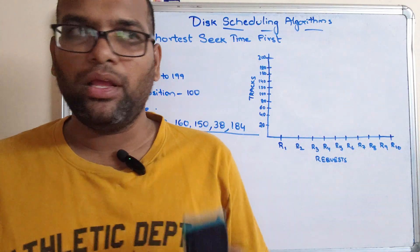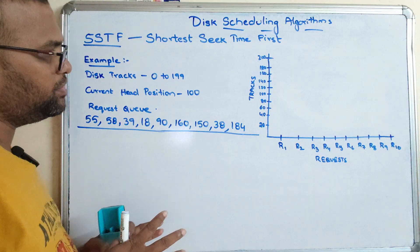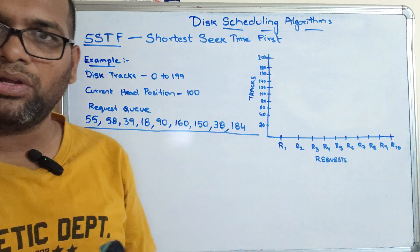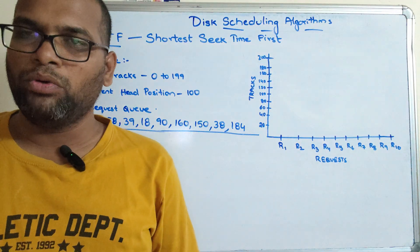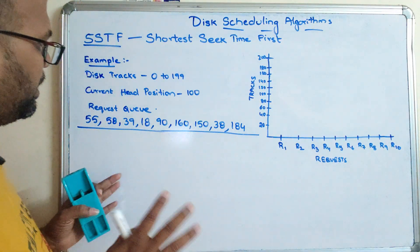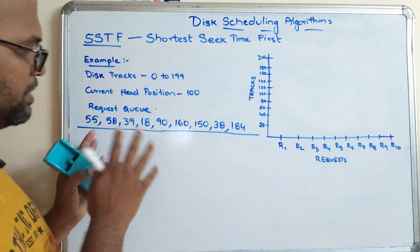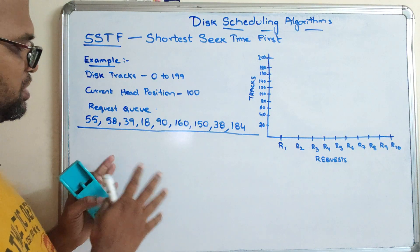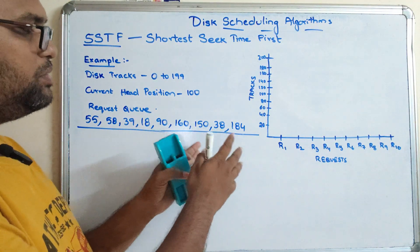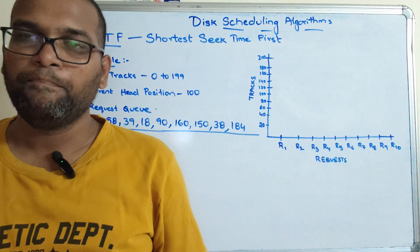We are taking the same example: disk tracks from 0 to 199, so 200 tracks total. The current head position is at 100, and the request queue is also the same: 55, 58, 39, 18, 90, 160, 150, 38, and 184.